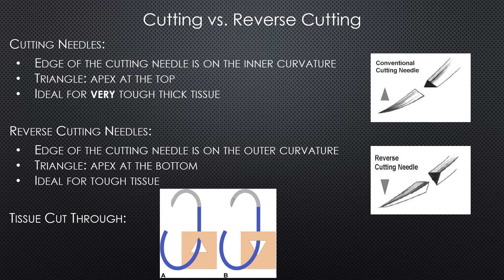In contrast, Image B is an example of a reverse cutting needle's path. See how the base of the triangle is closest to the edge of the wound — that flat part of the triangle is closer to the wound edge. Having this triangular base near the wound edge allows for greater contact area between the tissue and the suture material, which therefore decreases the risk of tissue tear-through.